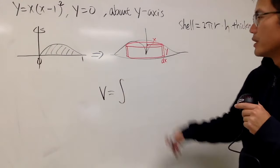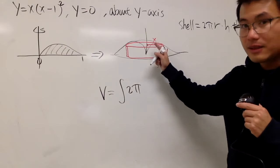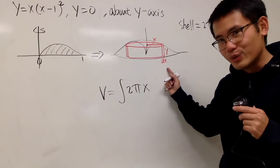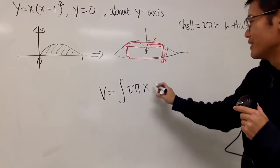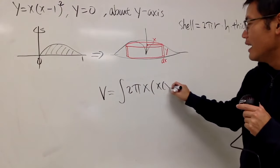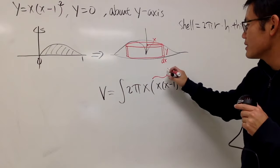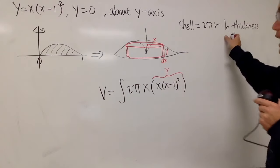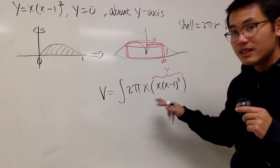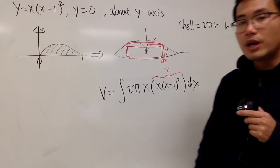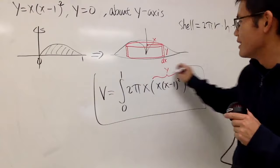Here dx is the thickness, the height is y, and the radius is x. The volume equals the integral of 2π times the radius, which is x, times the height y. Here y equals x(x−1)², so we put that down: x times (x−1)². You don't have to square again — this is just the height, not πr². We're in the x world, so we put dx and integrate from 0 to 1.